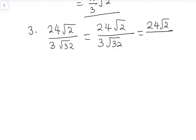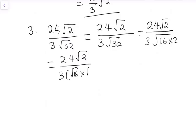We have 3, 16 times 2. 16 times 2 will give us 32. We'll bring 24 root 2 down, and then we have 3 here, root 16 times root 2.